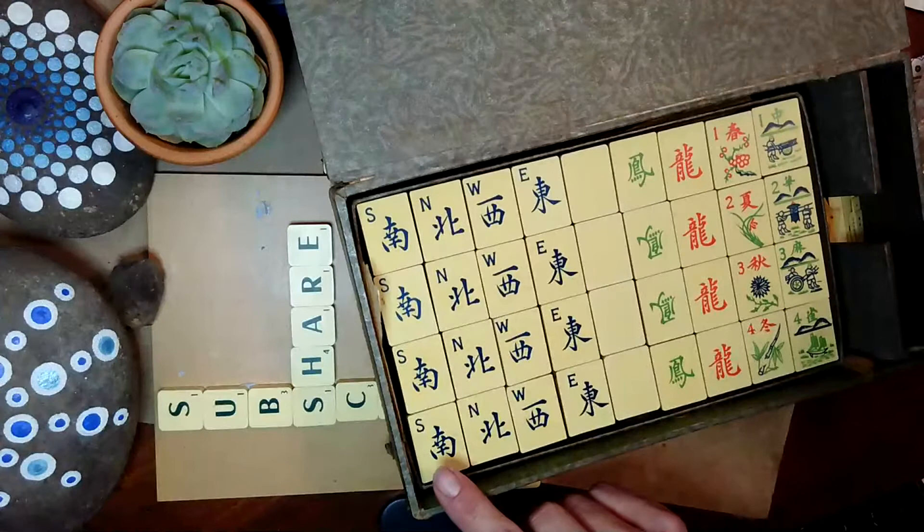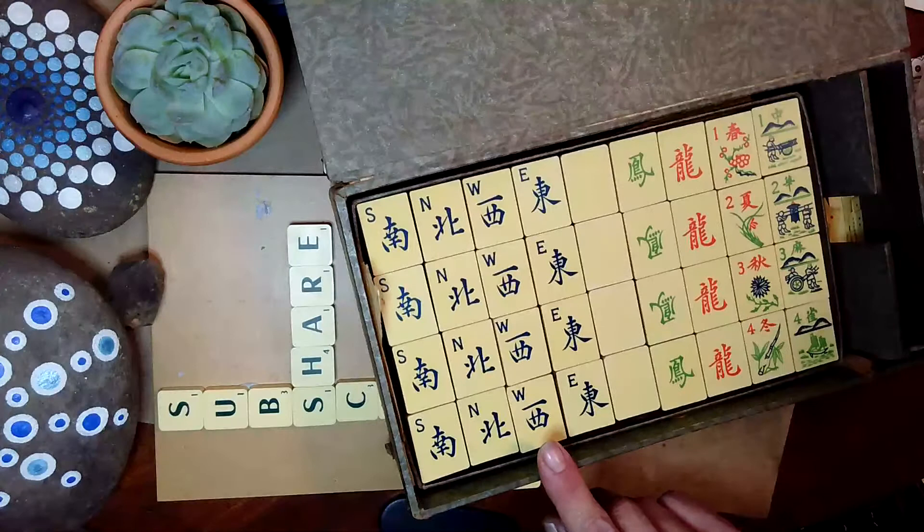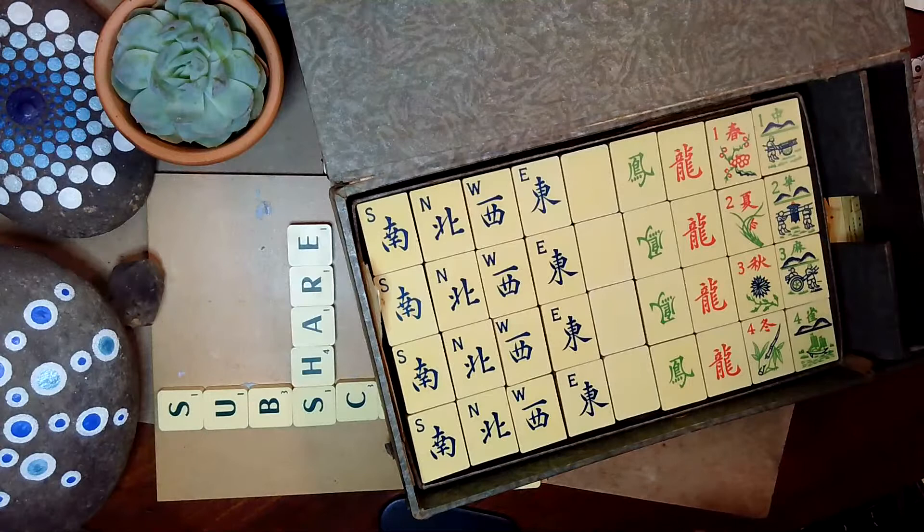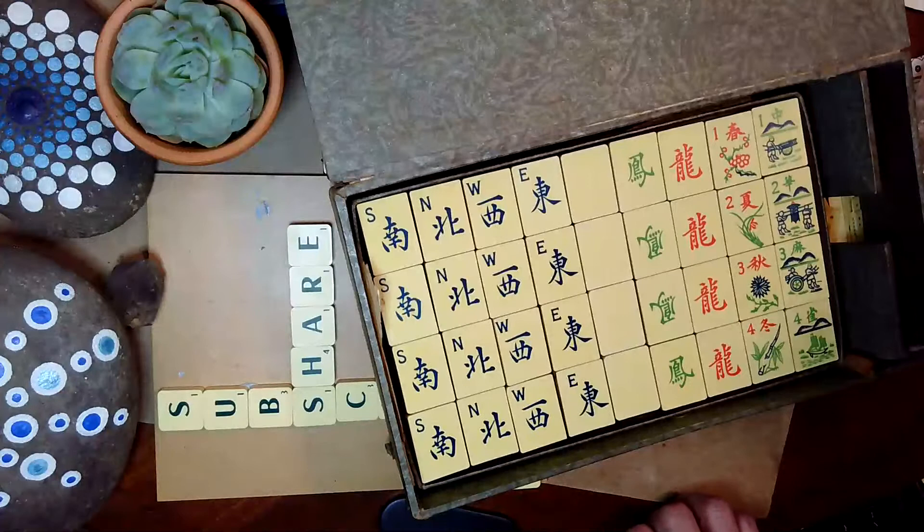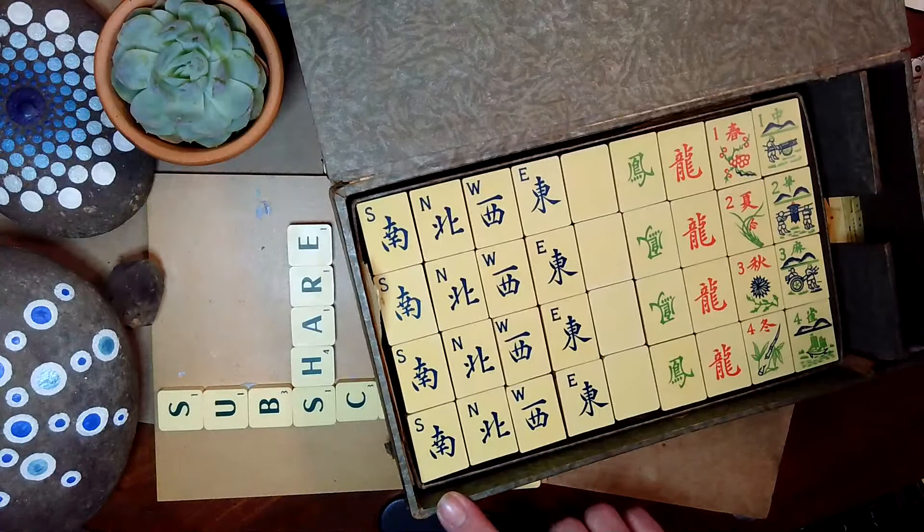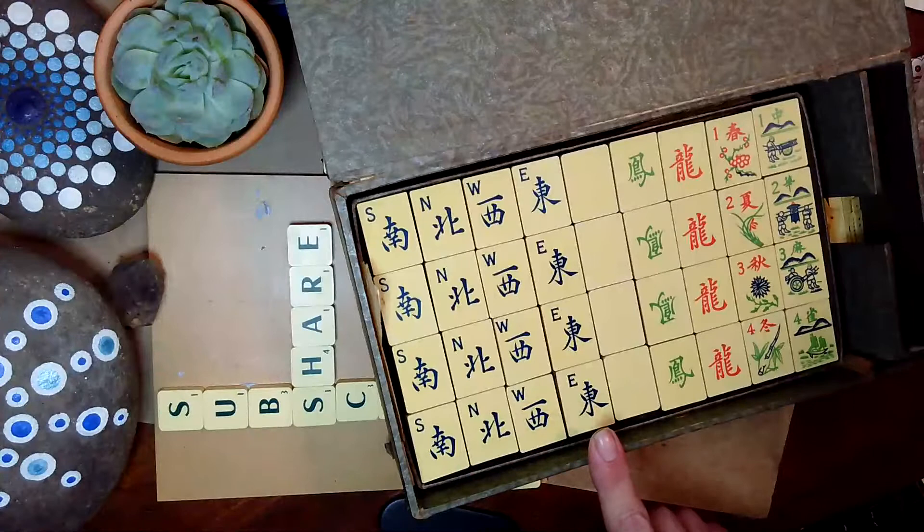Well, in Mandarin, then, if I were to read them, it would say, 南北西东. If I were to say this, yeah. Okay. If I were to say this in Cantonese, then it would be 南北西东. Okay, so that has some similar sounding ones, but not all of them sound the same. Yes.